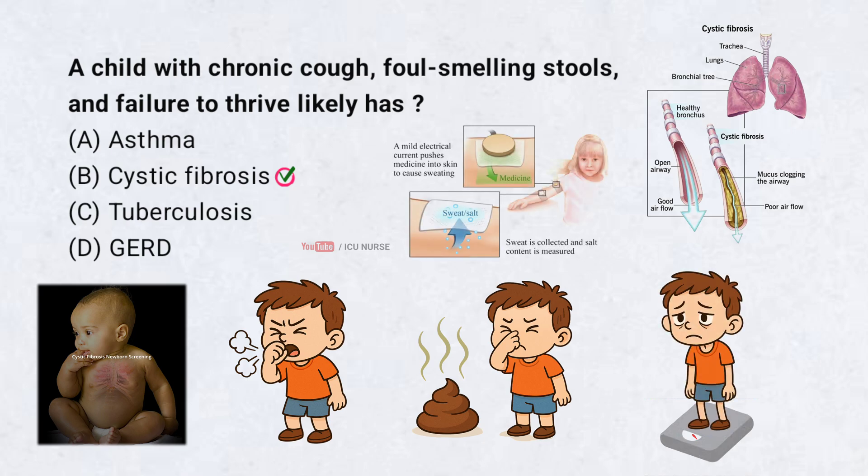A sweat chloride test — more than 60 millimoles per liter — confirms cystic fibrosis. Early diagnosis and treatment with enzyme supplements and airway clearance improve outcomes.